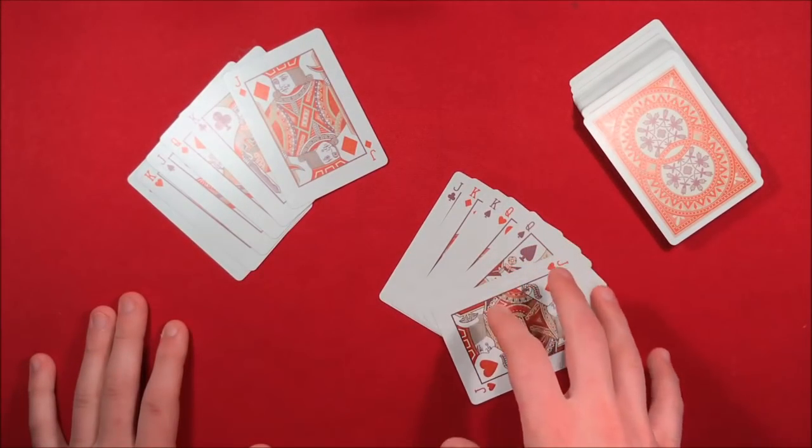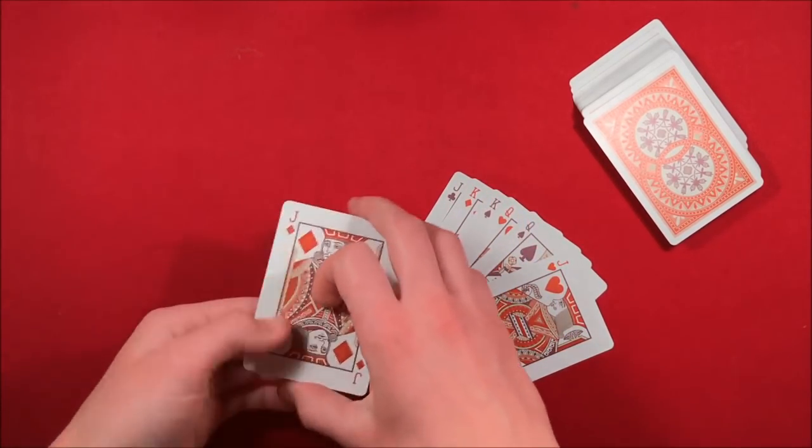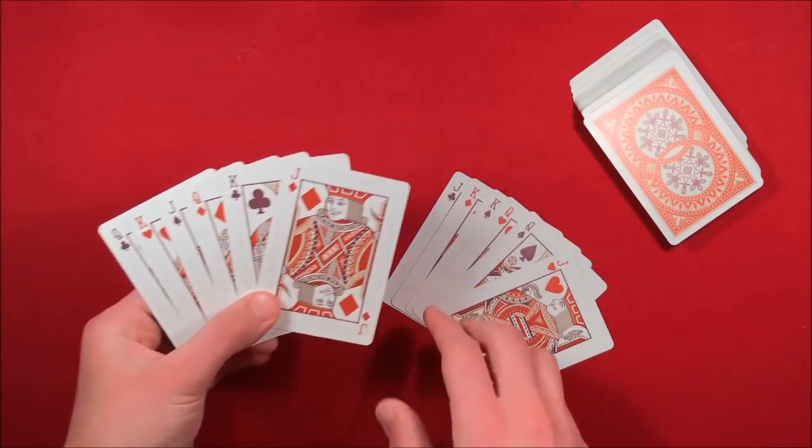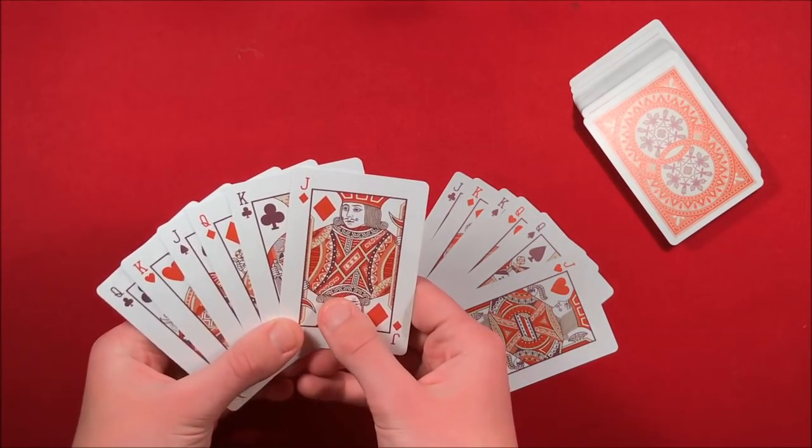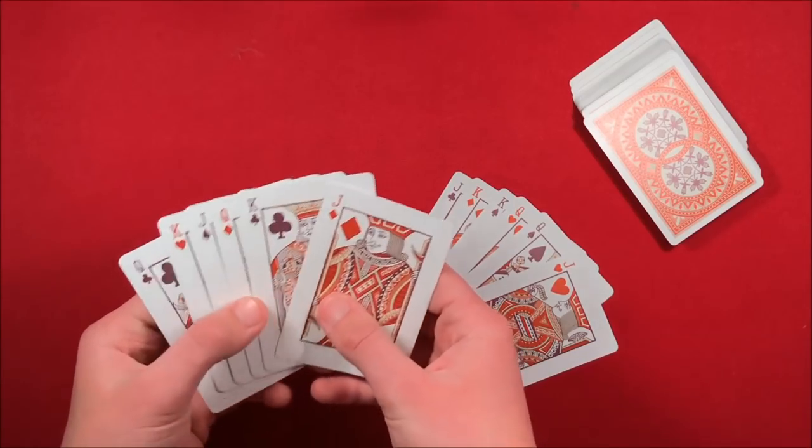All right, so here's how we're going to set up for the trick. What you want to do is get out all the face cards in the deck, so this way have all the jacks, queens, and kings. You get those out of the deck.